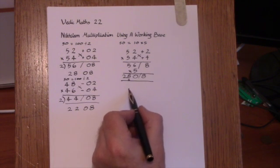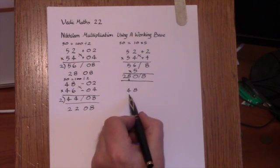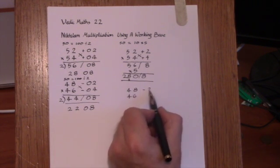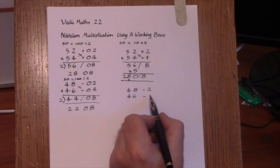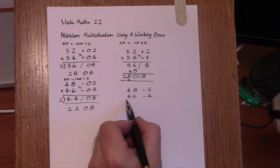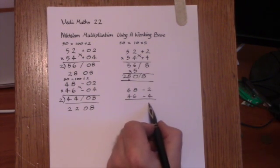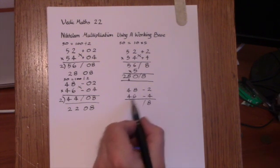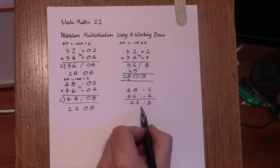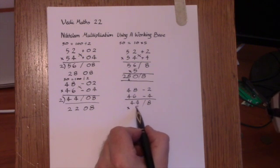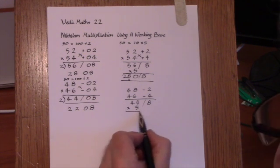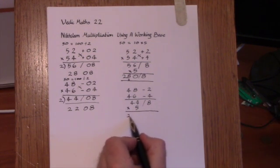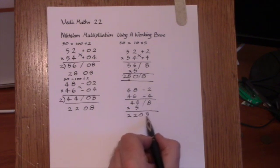And the same thing can be done with 48 times 46. This time, the deficiencies are 2 and 4. We multiply on the right to give 8 and cross-subtract to give 44. We then multiply the 44 by 5 and we get 2208 as the answer.